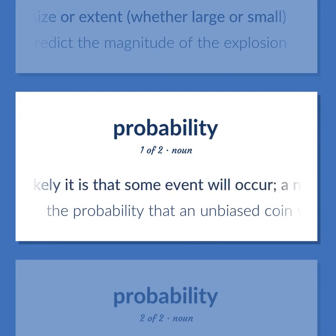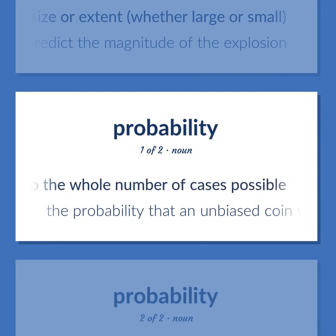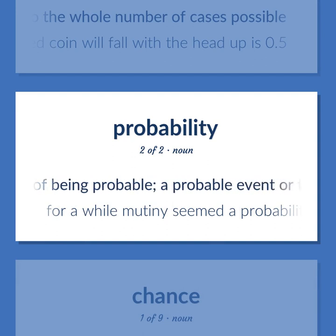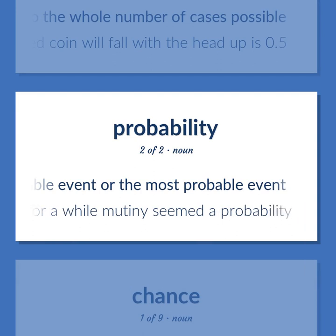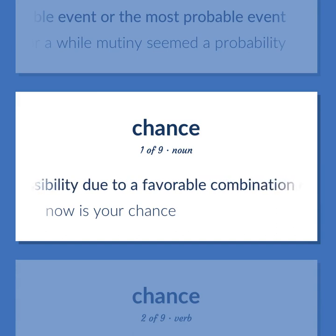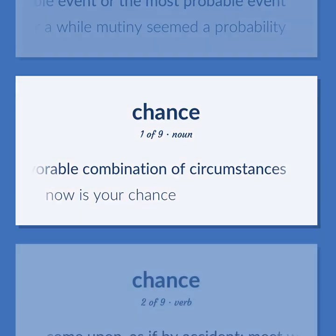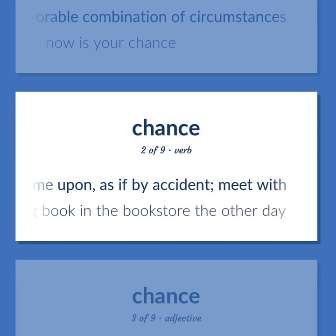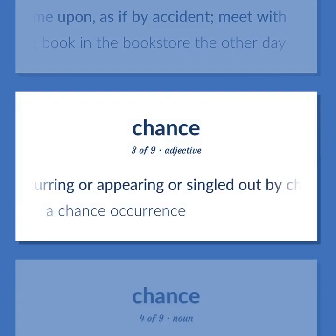Probability: A measure of how likely it is that some event will occur; a number expressing the ratio of favorable cases to the whole number of cases possible — the probability that an unbiased coin will fall with the head up is 0.5. The quality of being probable; a probable event or the most probable event — for a while, mutiny seemed a probability. Chance: A possibility due to a favorable combination of circumstances — now is your chance. Come upon, as if by accident, meet with — she chanced upon an interesting book in the bookstore the other day. Occurring or appearing or singled out by chance — a chance occurrence.